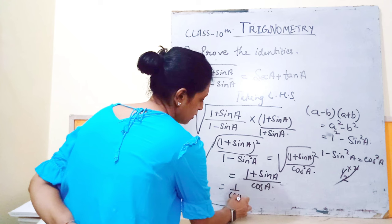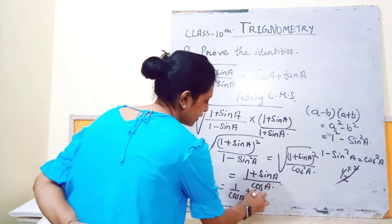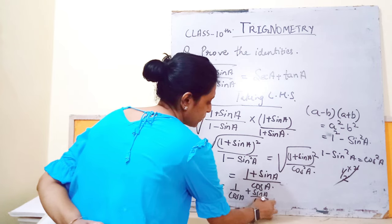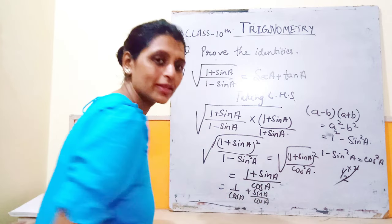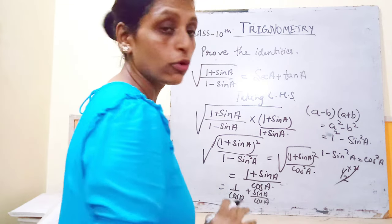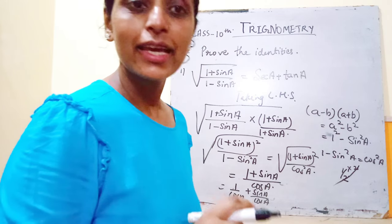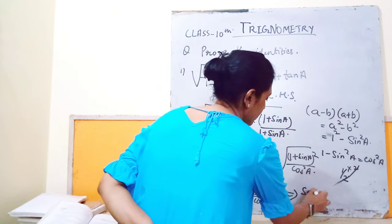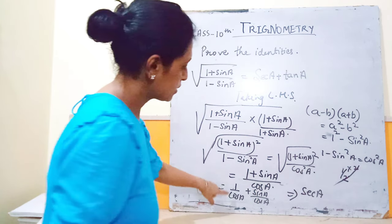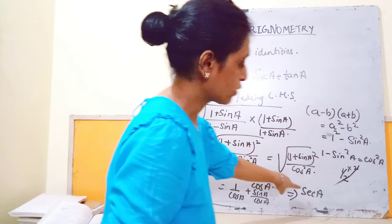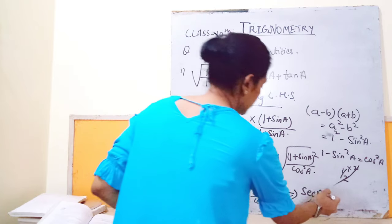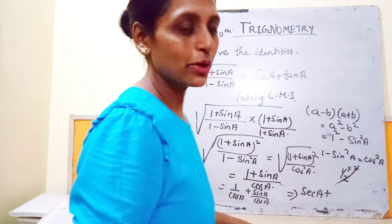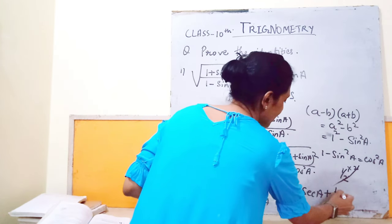Now (1 + sinA) upon cosA can be written as 1 upon cosA plus sinA upon cosA. We know that 1 upon cosA can be written as secA, since the reciprocal of cosA equals secA. And we know that sinA upon cosA is equal to tanA.